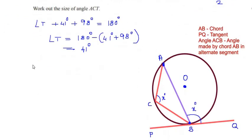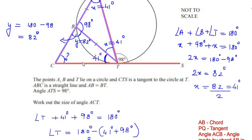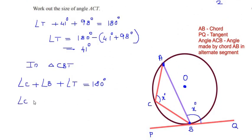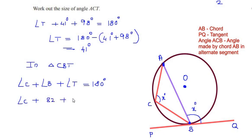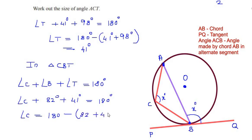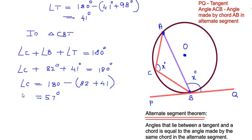Taking triangle CBT: angle C + angle B + angle T = 180 degrees, since all angles of a triangle add up to 180 degrees. Angle C is what we need to find; angle B is 82 degrees and angle T is 41 degrees. So angle C = 180 minus (82 + 41) = 57 degrees.